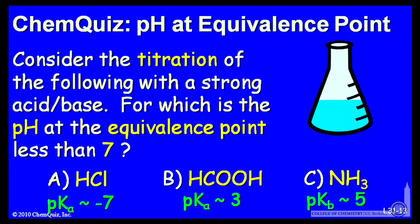HCl, that's a strong acid, a pKa of around minus 7, very large K. B, this is formic acid, a pKa of around 3. And ammonia, pKb of around 5.